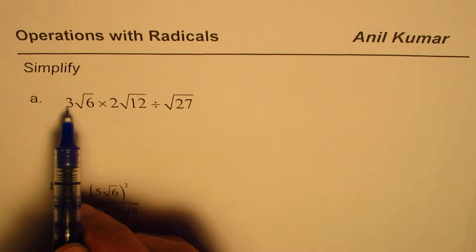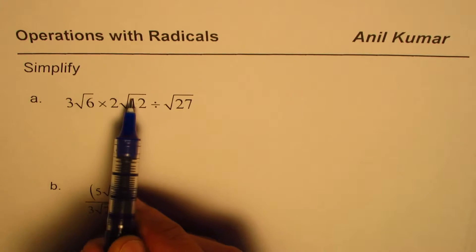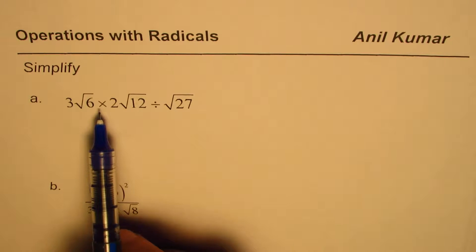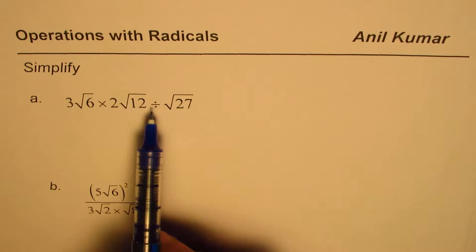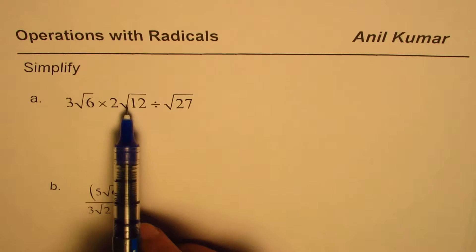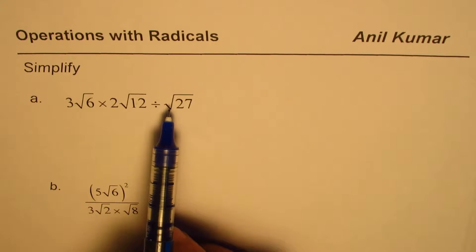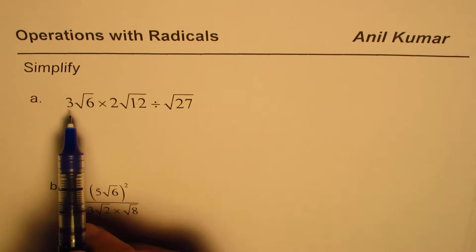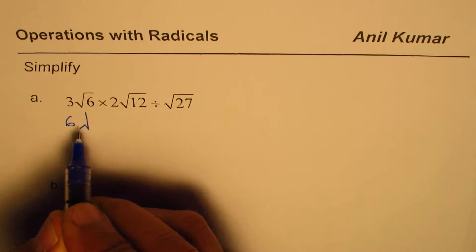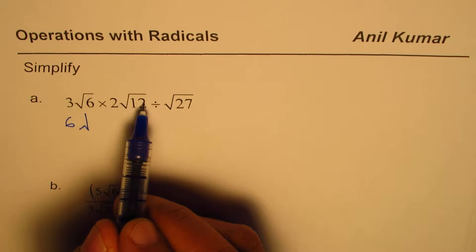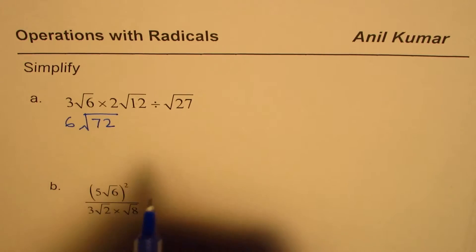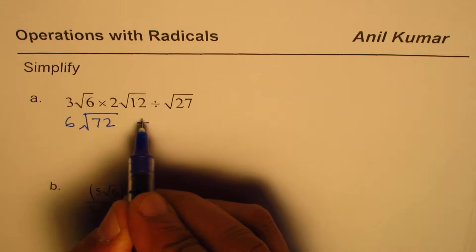Whenever you multiply, we'll multiply these two first and then divide. With order of operations, if we have multiplication and division, you have to move from left to right. This is very important to understand. So we get 3 times 2 as 6, and within the radical sign 6 times 12 which is 72. That is what we get when we multiply these two, and then we have to divide by √27.